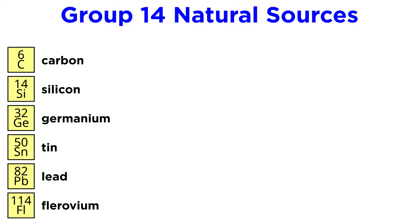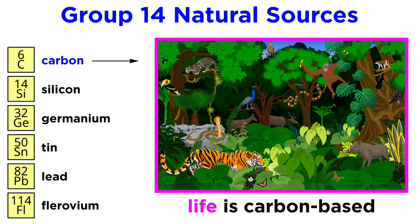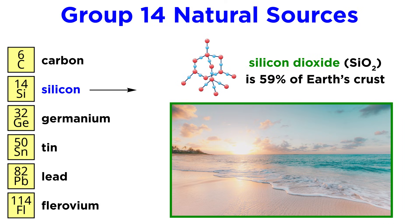So where can we find these elements? As we mentioned, carbon is just about everywhere, especially in living organisms, which are carbon-based. Silicon is even more abundant in the form of silicon dioxide. This actually makes up 59% of Earth's crust.